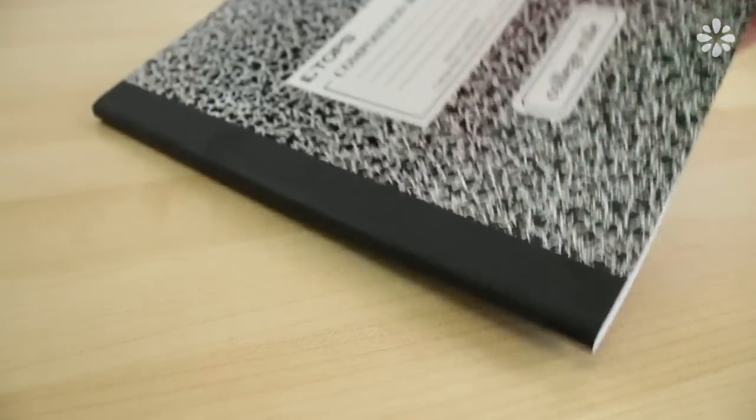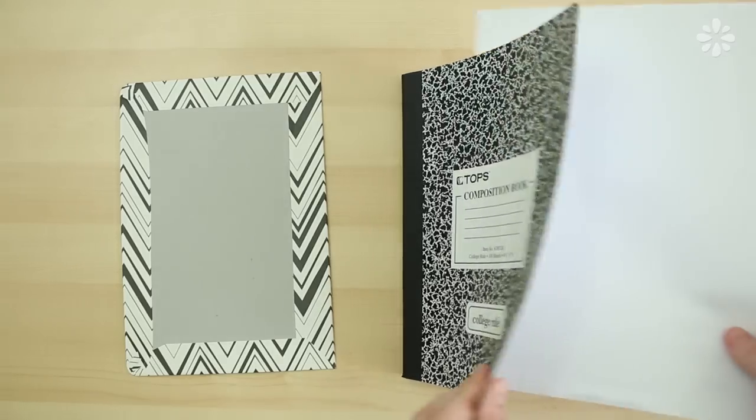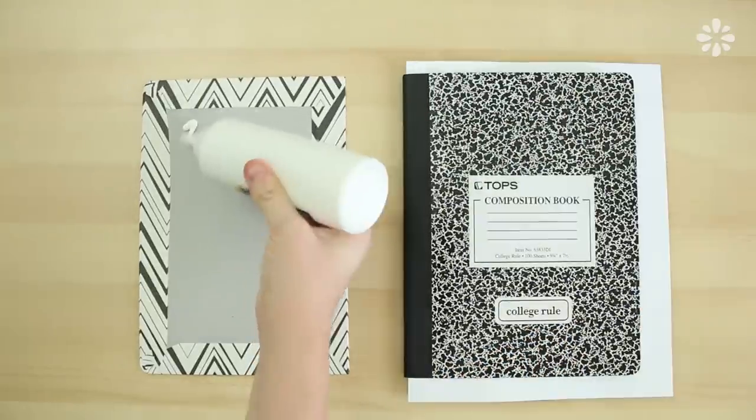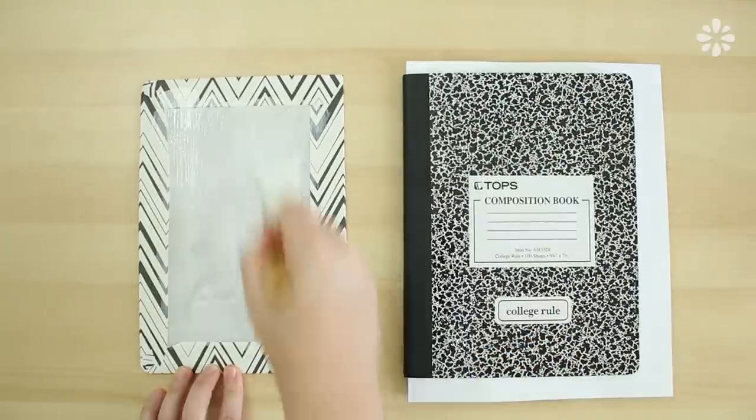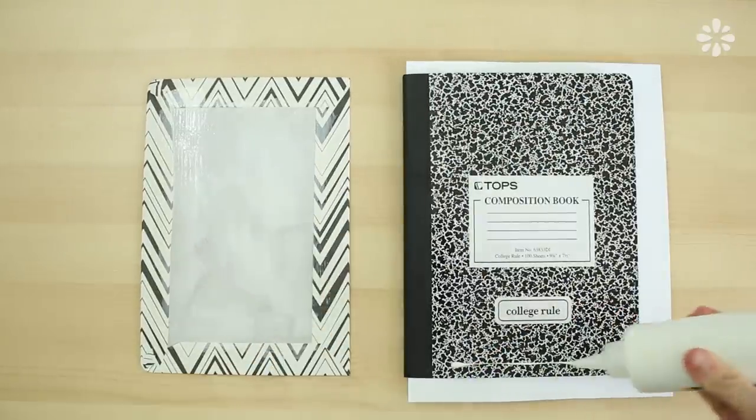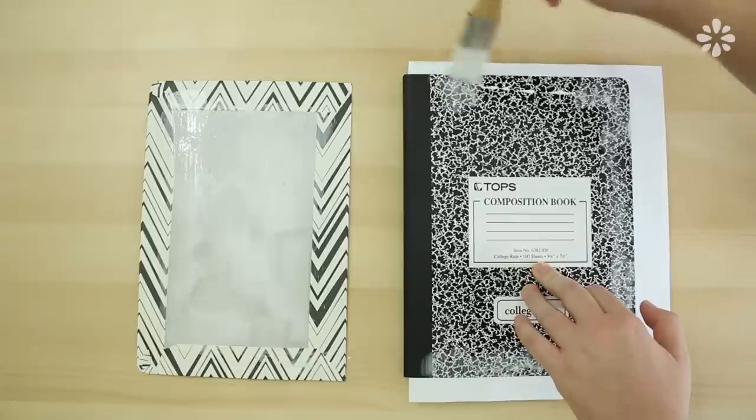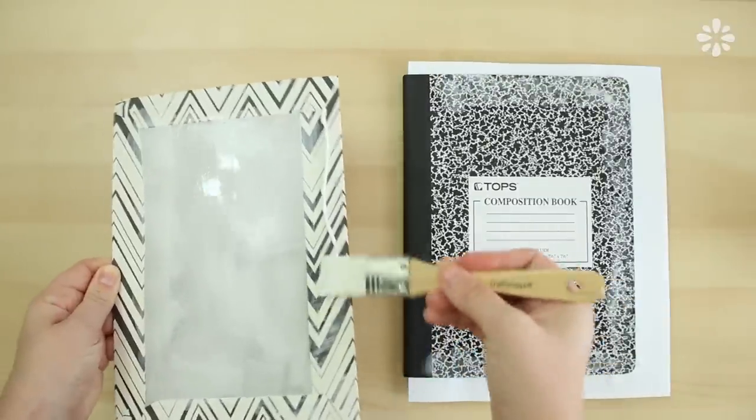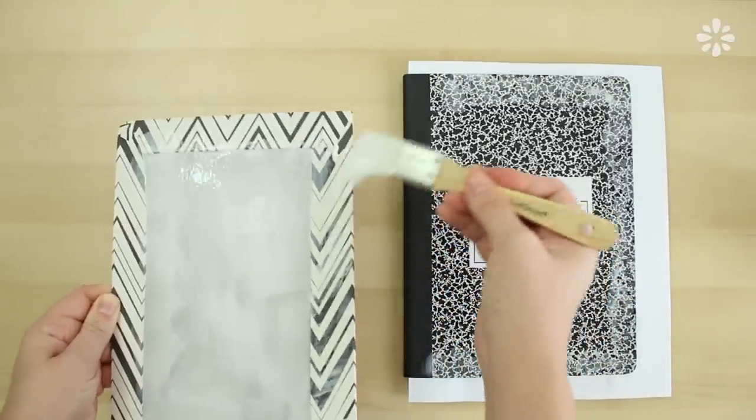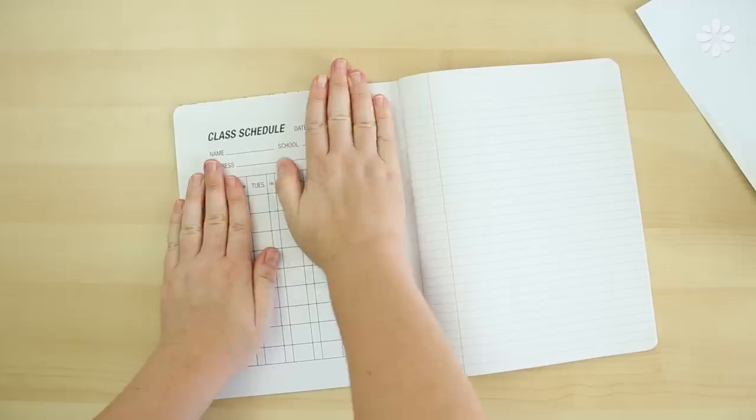Then grab your composition book. You can add some scrap paper underneath the cover for the messy glue. Then add some glue to the middle of the board, then to the edge of the composition book cover. And don't forget to add some glue to the edge that goes toward the spine. Then line it up and press it down.